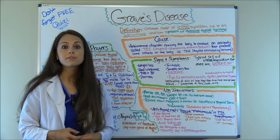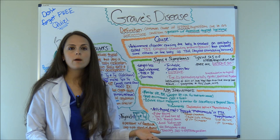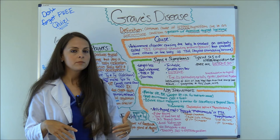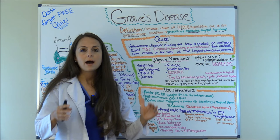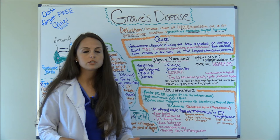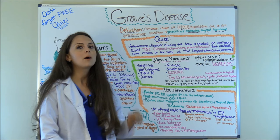We talked about thyroid storm in the previous video — it occurs either due to untreated hyperthyroidism or not taking medication properly, and people with Graves' Disease can enter into thyroid storm. This is where you get severe hyperthermia, increased tachycardia, elevated blood pressure, and it's life-threatening to the point of death. So if you don't know about that condition, you can access that video.